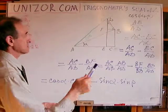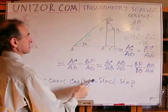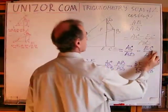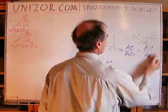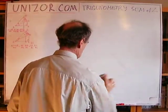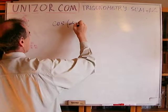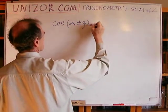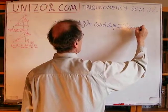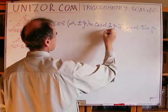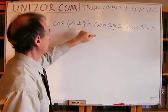So this is the formula for cosine. The difference between cosine of alpha plus beta and cosine of alpha minus beta is this sine term. For plus, it's minus; for minus, it's plus. Let me summarize it in one expression: cosine of alpha plus-or-minus beta equals cosine alpha cosine beta minus-or-plus sine alpha sine beta. Plus-minus corresponds to minus-plus.